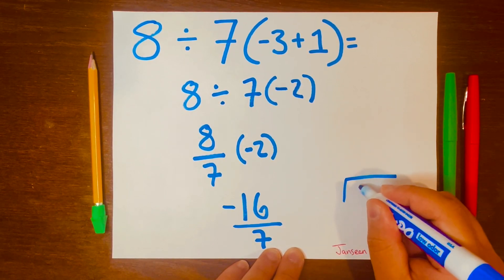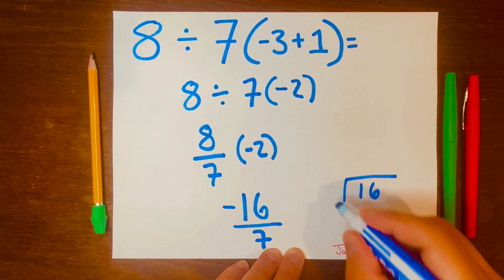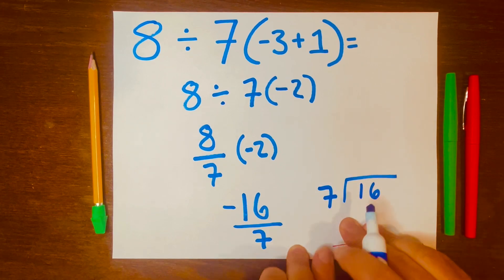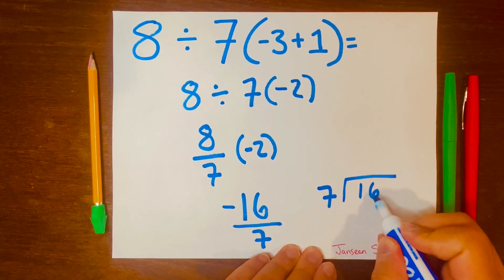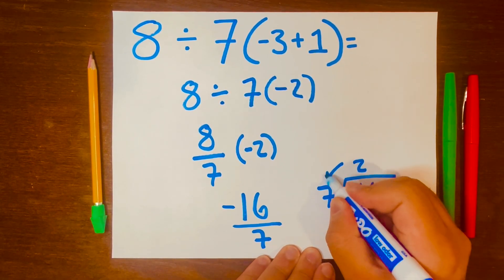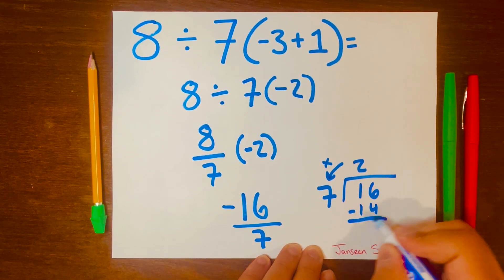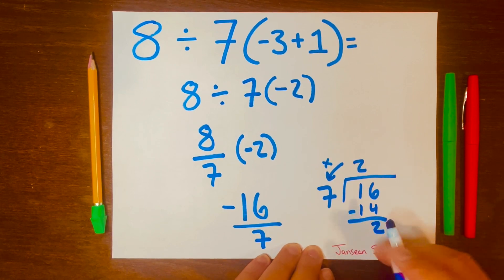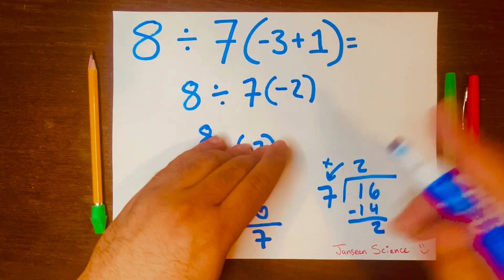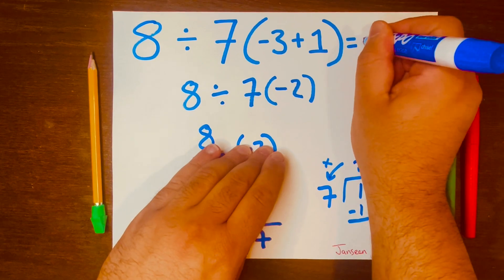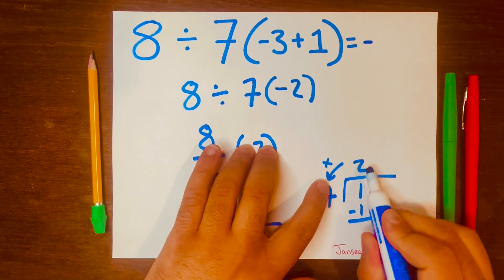So 16 will be your dividend, 7 will be your divisor. 7 can fit into 16 twice. Then we multiply: 2 times 7 is 14. 16 minus 14 is 2.